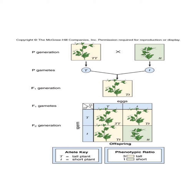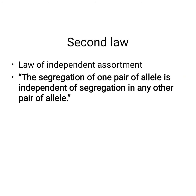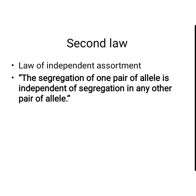With complete dominance, segregation leads to a phenotypic ratio of 3:1 and a genotypic ratio of 1:2:1 in monohybrid. The dihybrid phenotypic ratio of 9:3:3:1 is also based on this law. Examples of Law of Segregation include inheritance of seed shape in peas, segregation for waxy gene in maize, and segregation for spore color in Neurospora. The second law is the Law of Independent Assortment, which states that segregation of one pair of alleles is independent of segregation of any other pair. The dihybrid ratios are explained based on this law.